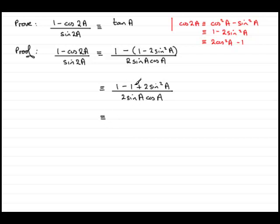Now, cleaning up the top, 1 take away 1 is 0. So we're left with 2 sine squared a, all divided by 2 sine a cos a. And can you see what happens next?